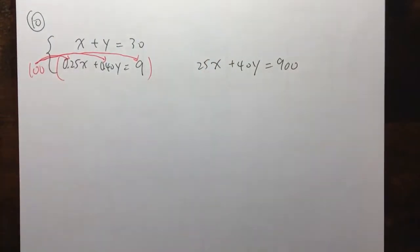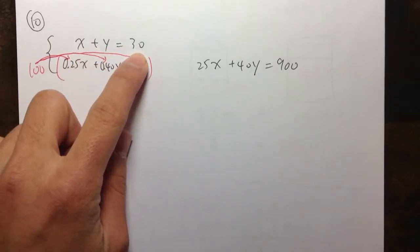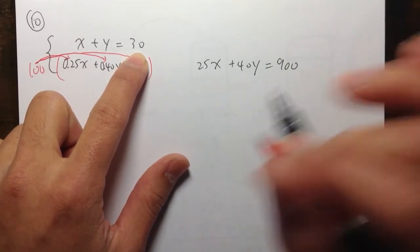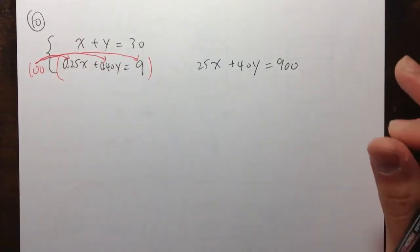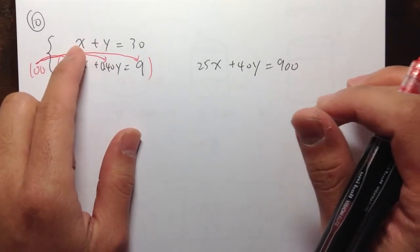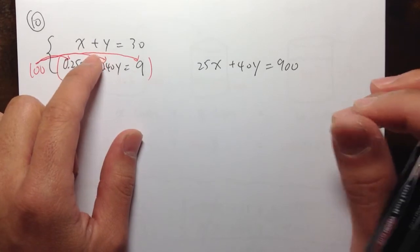And then, on the top, as we can see, we have x plus y is equal to 30. If you want to do substitution, if you want to do sub method, you just need to isolate one of the variables. And they are actually equally easy. So, it doesn't matter which one that you isolate.